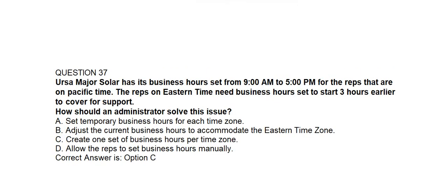Question number thirty-seven. URSA Major Solar has its business hours set from 9 a.m. to 5 p.m. for representatives on Pacific time. The representatives on Eastern time need business hours set to start 3 hours earlier to cover for support. How should an administrator solve this issue? Option A: Set temporary business hours for each time zone. Option B: Adjust the current business hours to accommodate the Eastern time zone. Option C: Create one set of business hours per time zone. Option D: Allow the representatives to set business hours manually. Correct answer is Option C.